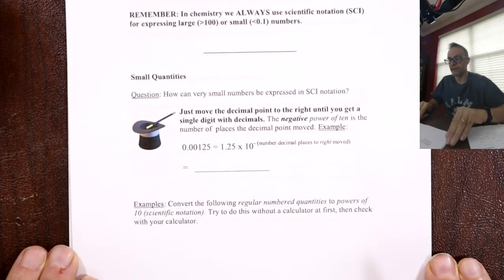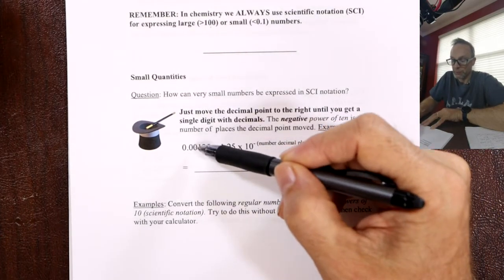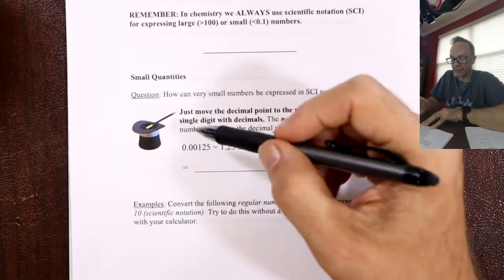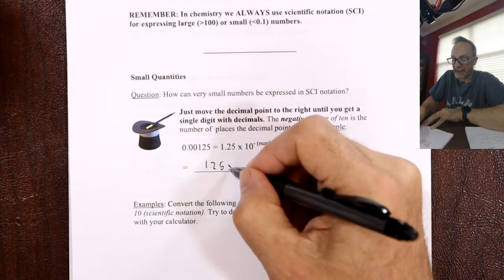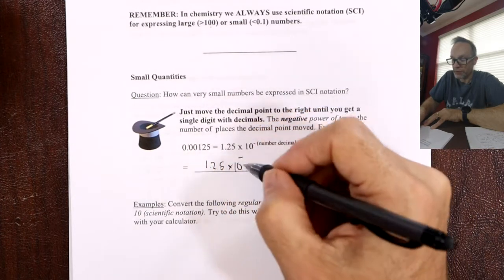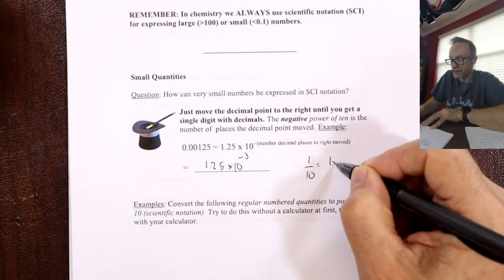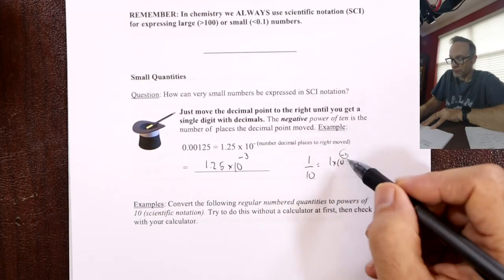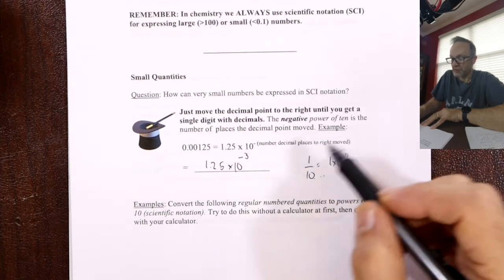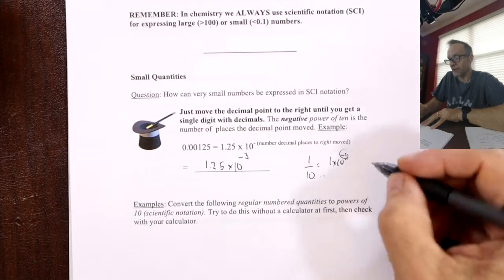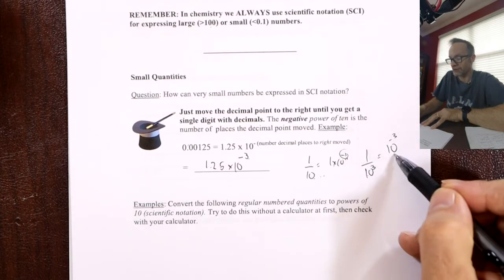Now let's talk about small numbers — a very similar concept. We're going to jump the decimal place but go in the other direction. So going 1, 2, 3 places gives 1.25 — but it's a negative power. So that's 1, 2, 3 — 10 to the minus 3. 1 over 10 equals 1 times 10 to the minus 1. When you divide by something, it becomes a negative power. A tenth is minus 1, a hundredth is minus 2, a thousandth is minus 3.